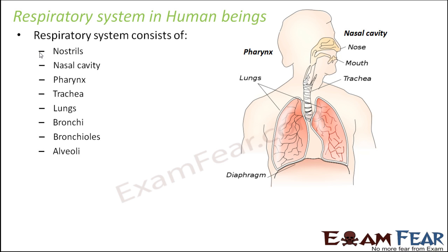The respiratory system consists of nostrils and the nasal cavity. Just like you have an oral cavity — an open space inside your mouth — similarly inside your nose you can feel some open space. That is the nasal cavity. Then you have the pharynx. While we talked about pharynx, we talked about three portions of pharynx.